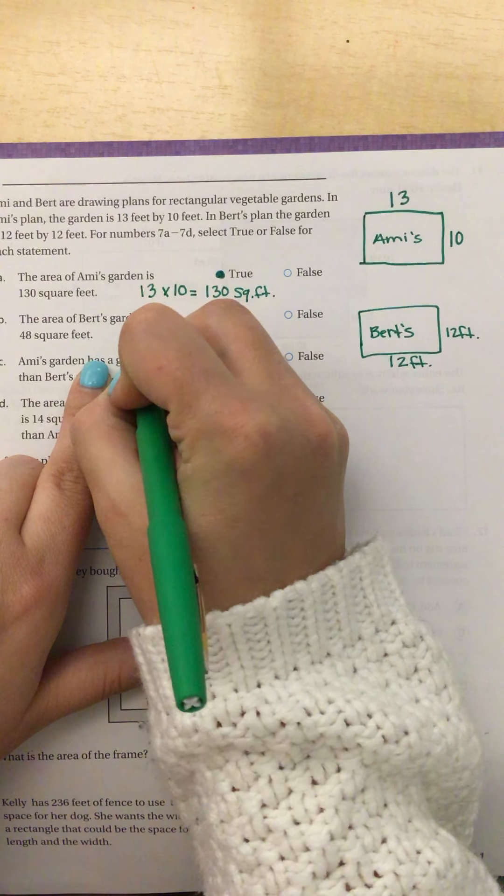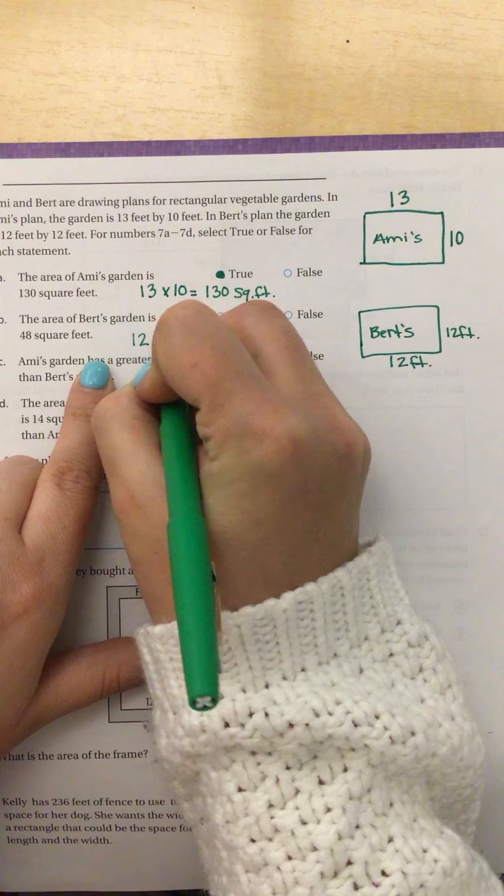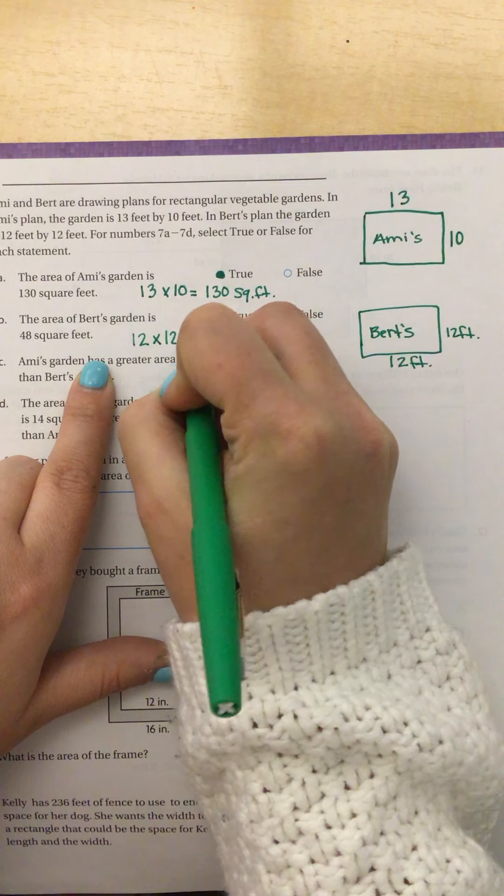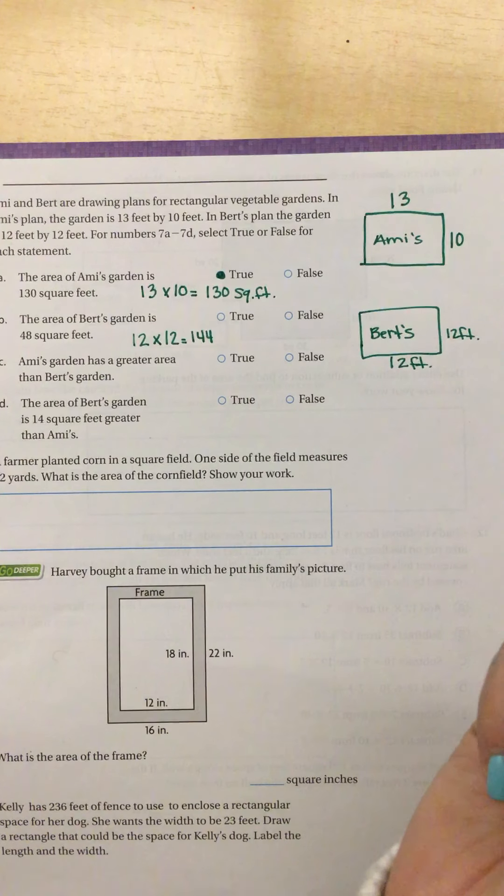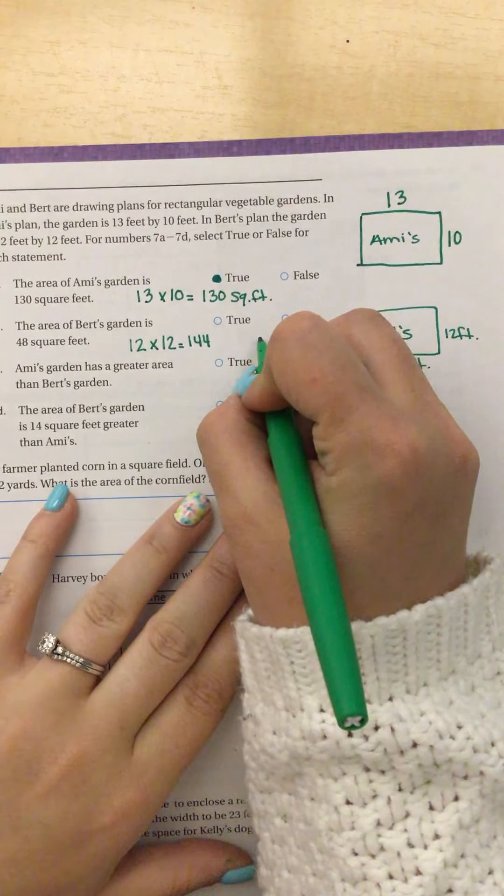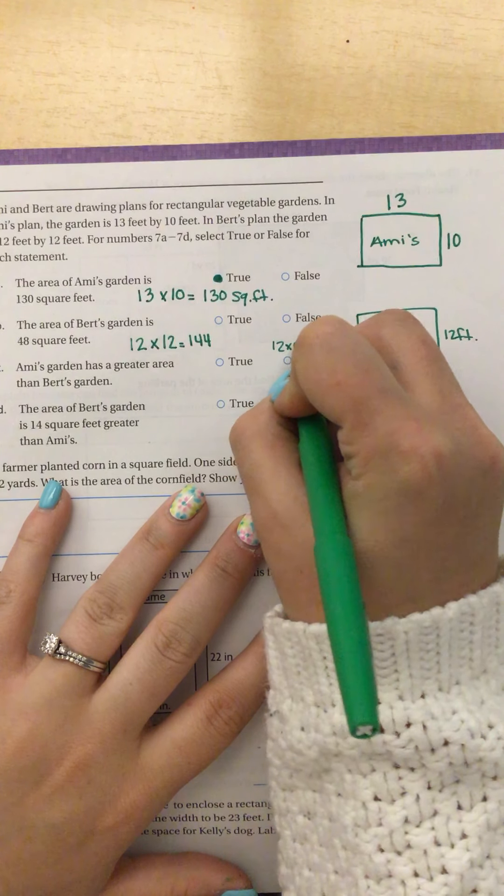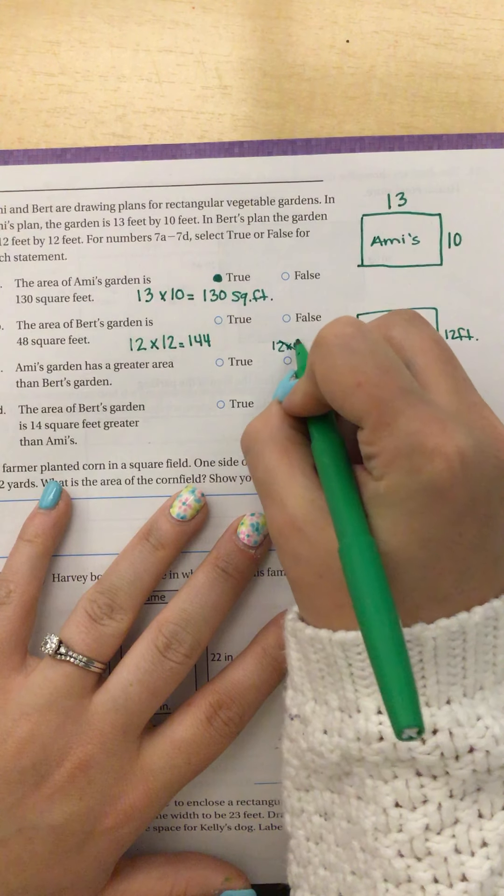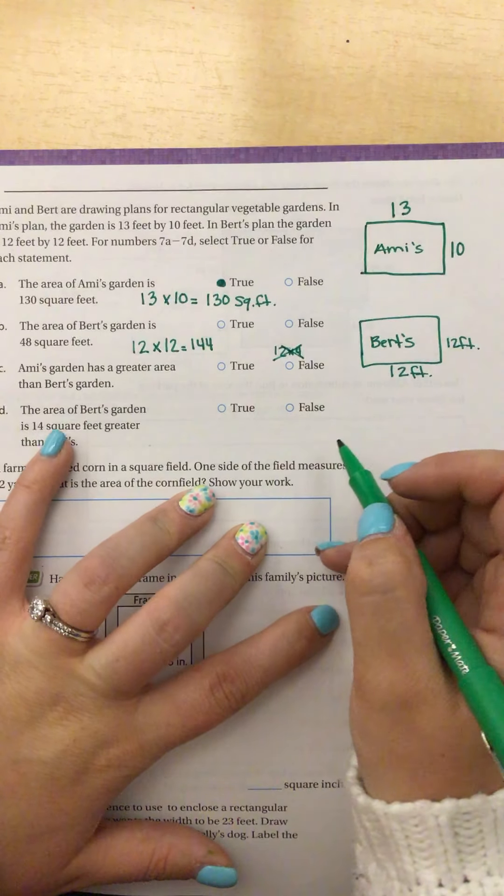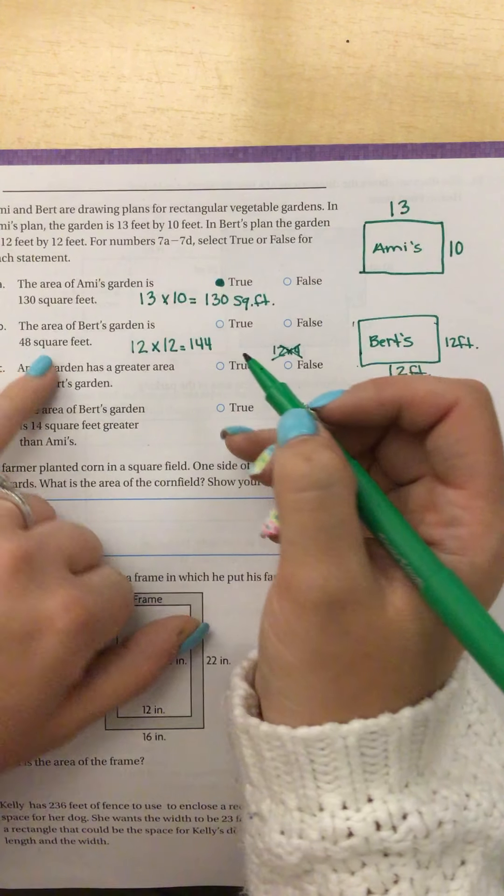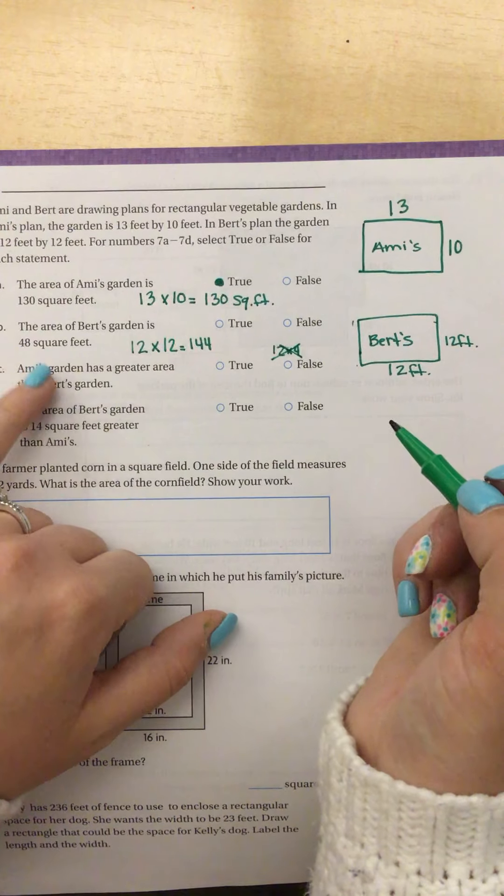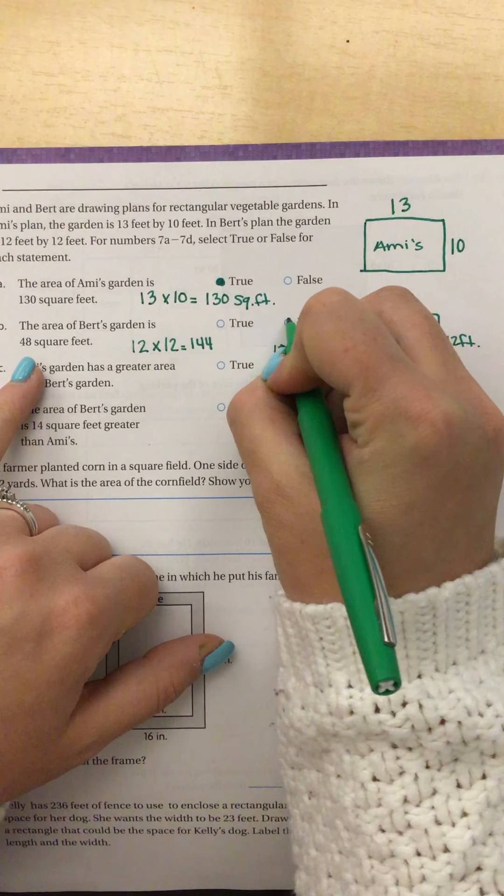The area of Bert's garden is 48. To do Bert's garden, I'm going to do the side times the side, which is 144. Now, Bert made a very common mistake. When you have a square, it's very easy to just think we're doing 12 times 4. But 12 times 4 is actually going to find us the perimeter because we're doing 12 plus 12 plus 12 plus 12. So multiplying by 4 would not get us the area, that would get us the perimeter. So that one is false.